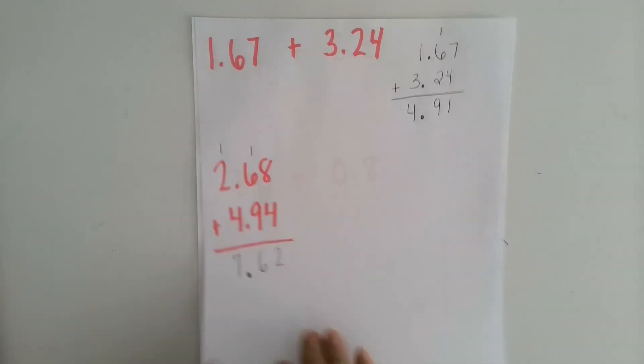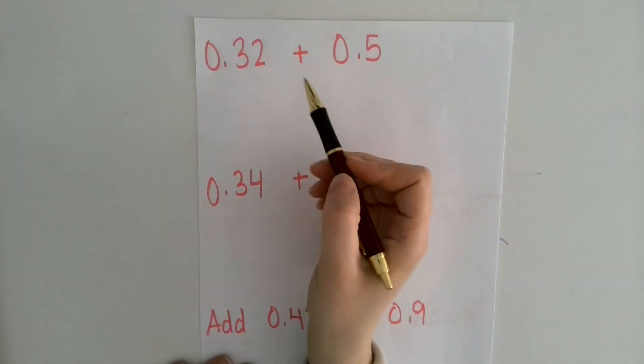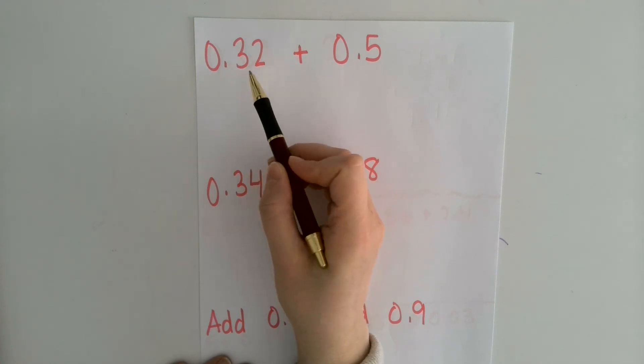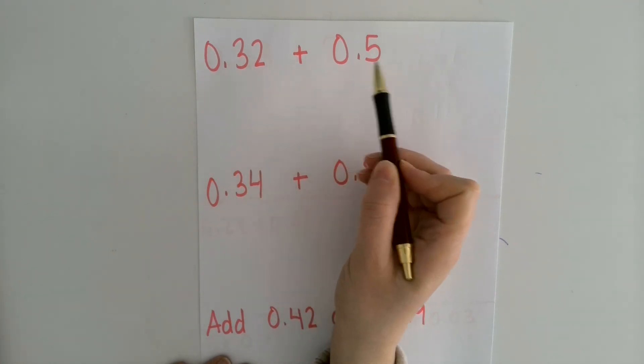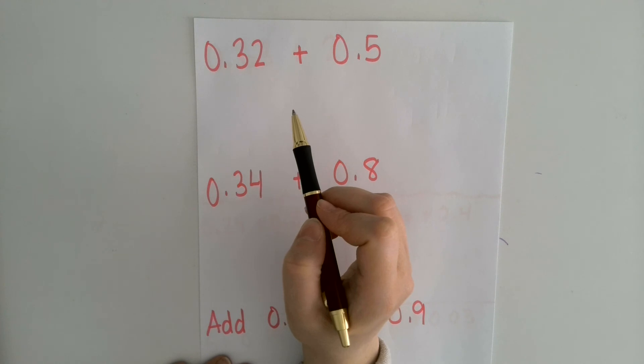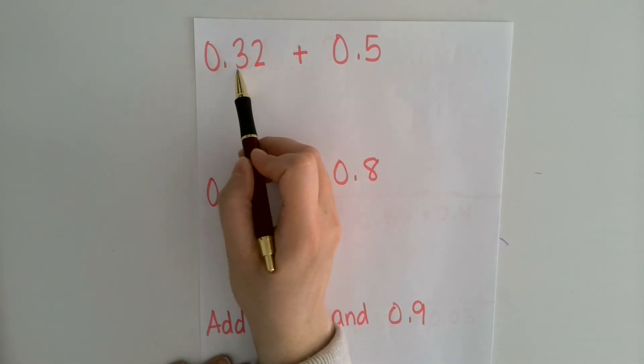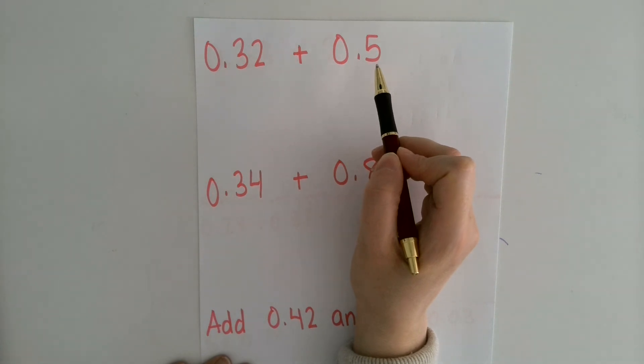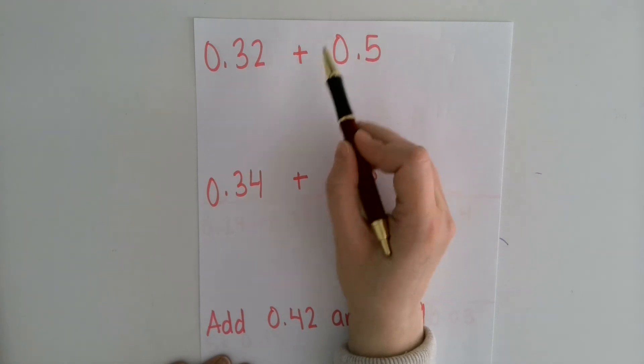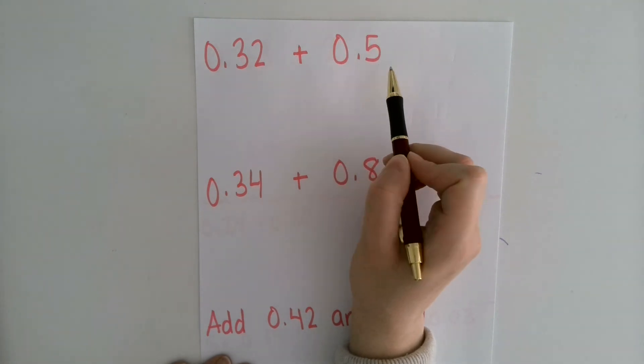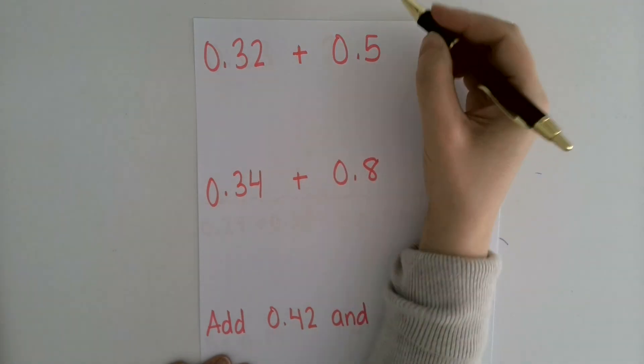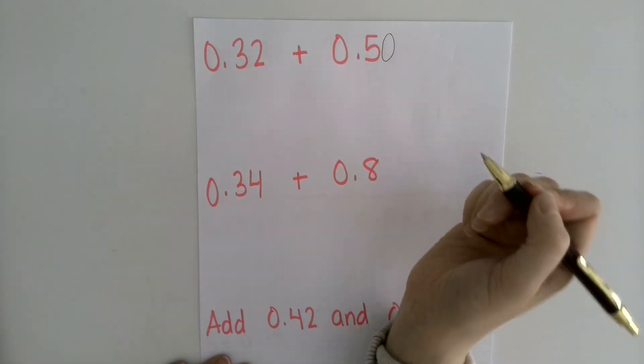So now we're going to look at some different problems. So here, for example, I have 0.32 plus 0.5. The problem here is that this decimal goes 2 places past the decimal point and this one only goes 1 place past the decimal point. When you have this situation, you want to adjust this one so that it also goes 2 places past the decimal point. And you do that by adding a 0.